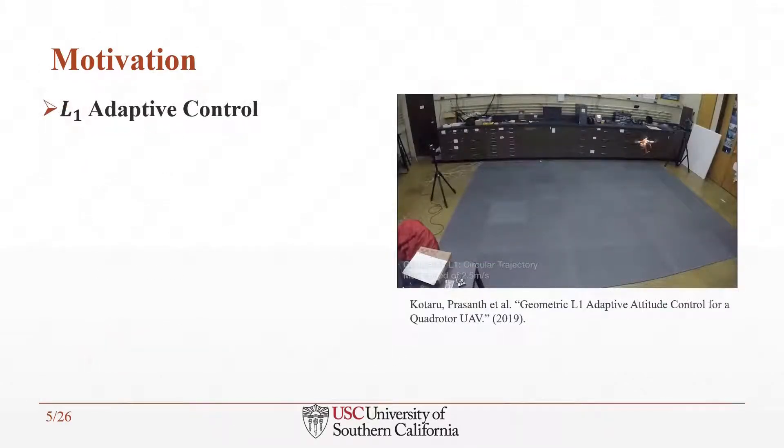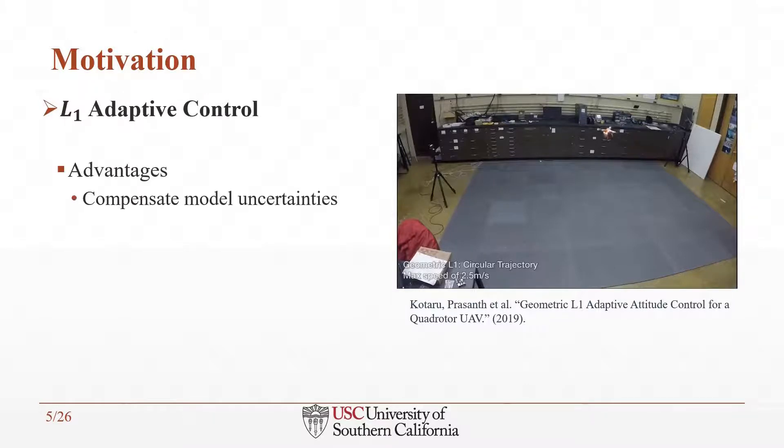L1 adaptive control can compensate for model uncertainties. This video shows the UC Berkeley quadrotor UAV which utilizes an L1 adaptive controller. As shown in the video, although a 200-gram mass is attached to the robot, it flies smoothly and is stable like when no extra mass is connected to its body.